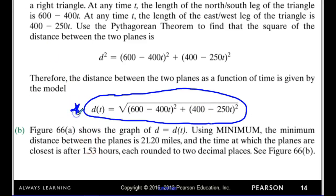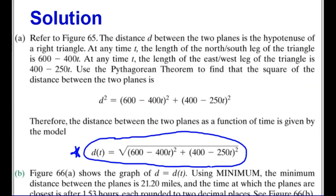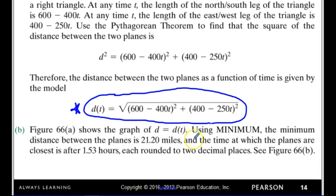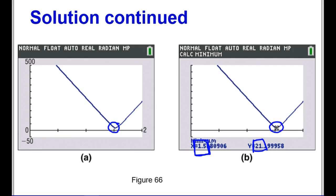Once I have this distance function built, I graph it and can see there's a minimum. Using the calculator's minimum function or clicking in Desmos, I find that when x is approximately 1.5 hours, the planes are at their closest. The minimum distance was 21.2 miles after about 1.53 hours. So I built the function first, and then I can use that function to help me minimize or maximize distances and areas.